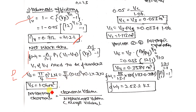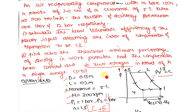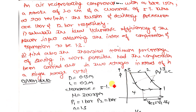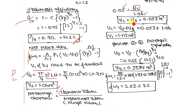The clearance percentage is given as 5%, and Vs = 1.06 m³ has just been calculated, so the clearance volume Vc can now be found. From the PV diagram, Vc = V3, and calculating gives V3 = Vc = 0.053 m³.